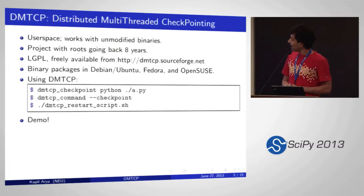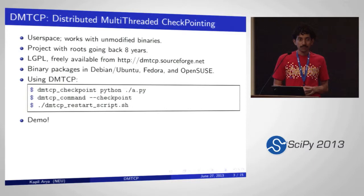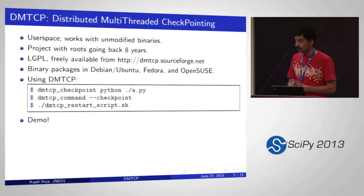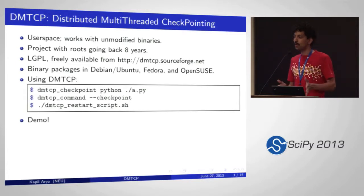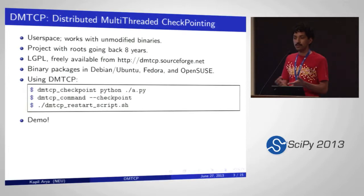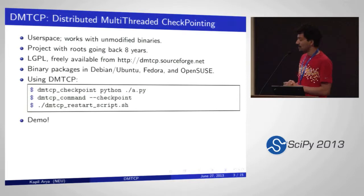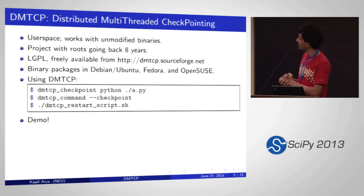In this work I'm talking about DMTCP, which stands for Distributed Multi-Threaded Checkpointing. It's a robust and mature package which has been around for about eight years. It works completely in user space — no kernel modifications required — and you don't need to modify your binary. It just works on unmodified binaries. It's also open source, LGPL, freely available on SourceForge.